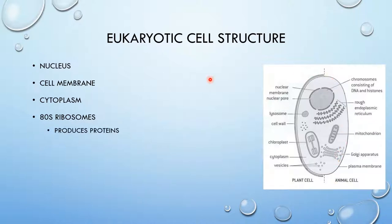As I said, the 80S refers to the size of these ribosomes. The ribosomes in eukaryotic cells also produce proteins. However, they are a little bigger because in prokaryotic cells, they have 70S ribosomes.